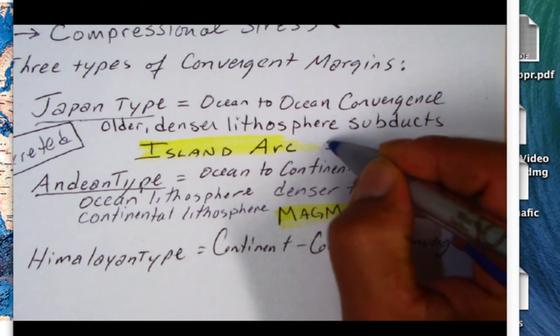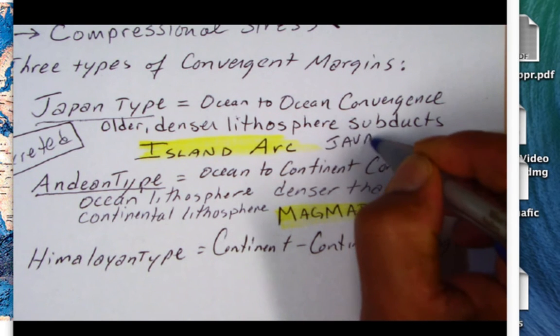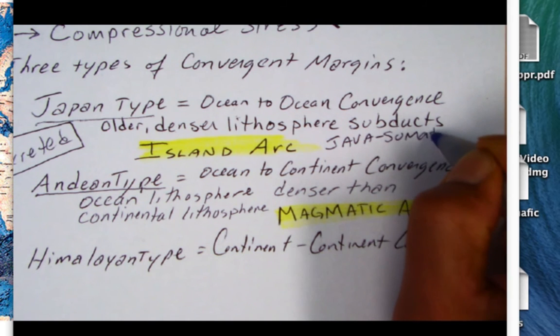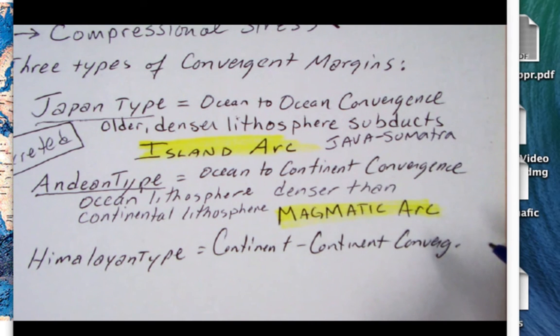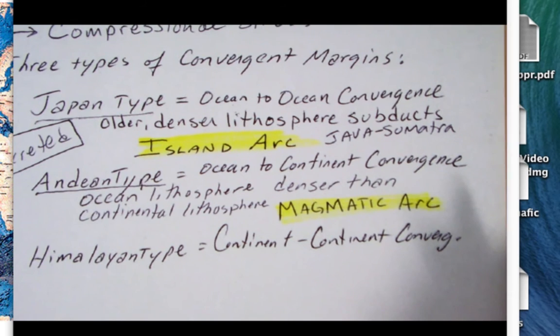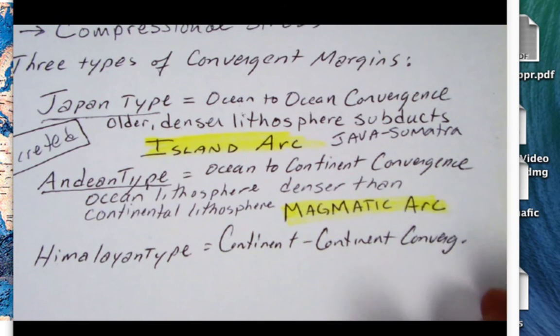Java-Sumatra are another set of island arc volcanoes in the Indian Ocean. The Aleutian Islands off of Alaska are examples of an ocean-to-ocean convergence.